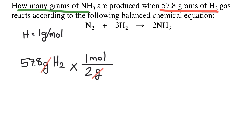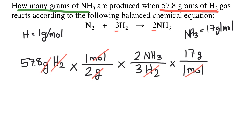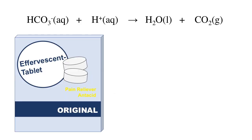So we'll take 57.8 and divide by that molar mass of 2. The grams cancel and we're left with moles. So now we can multiply by the mole ratio of 2 over 3. Finally, we'll need to convert our answer from moles to grams. This time, we need the molar mass of ammonia, which is 17 grams per mole. To cancel the mole in this case, we want the 17 grams on the top and the 1 mole on the bottom. So we'll plug all of this into our calculator and we'll get 328 grams of ammonia.